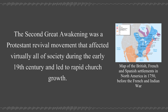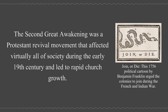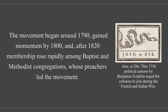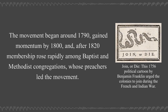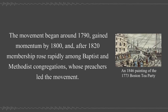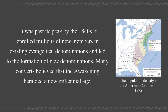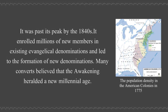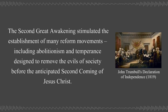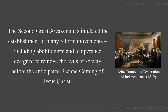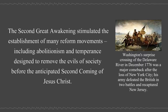The Second Great Awakening was a Protestant revival movement that affected virtually all of society during the early 19th century and led to rapid church growth. The movement began around 1790, gained momentum by 1800, and after 1820 membership rose rapidly among Baptist and Methodist congregations. It was past its peak by the 1840s. It enrolled millions of new members in existing evangelical denominations and led to the formation of new denominations. The Second Great Awakening stimulated the establishment of many reform movements, including abolitionism and temperance designed to remove the evils of society before the anticipated second coming of Jesus Christ.